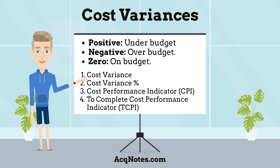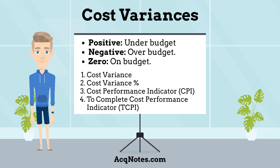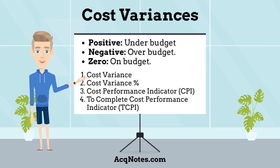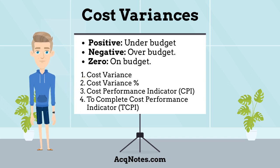There are four different cost variance methods that are commonly used in earned value management. They are: Cost Variance, Cost Variance Percentage, Cost Performance Indicator (CPI), and finally, To Complete Cost Performance Indicator (TCPI). I will now go into more detail on each type.